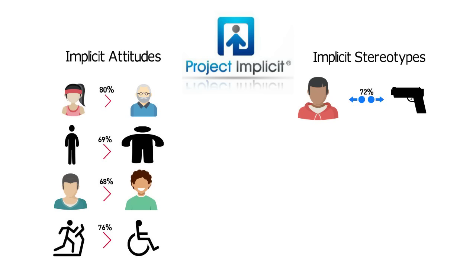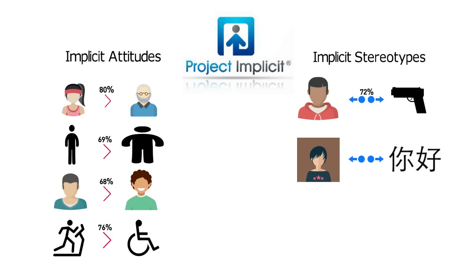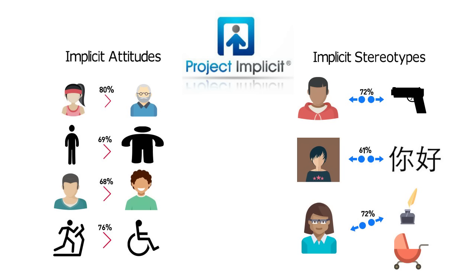Implicit stereotypes — which are specific trait associations — are also predictable. 72% of participants associate blacks with weapons as opposed to harmless objects. 61% associate Asians with the foreign as opposed to American. 72% associate women with humanities as opposed to math. 76% associate women with family as opposed to career.